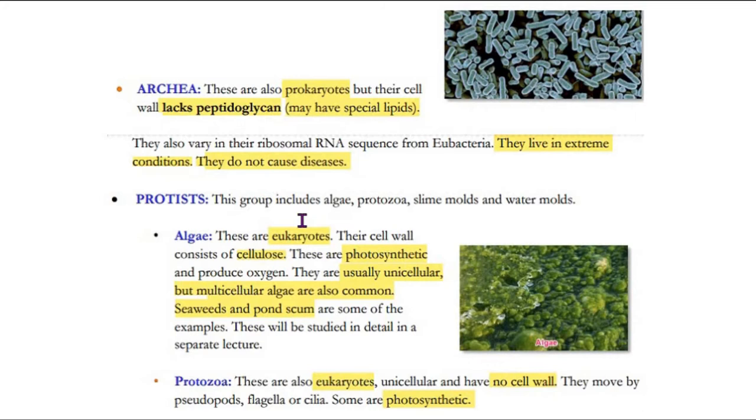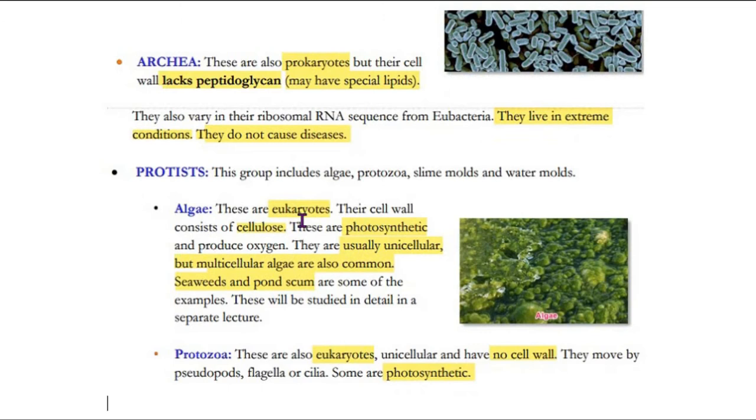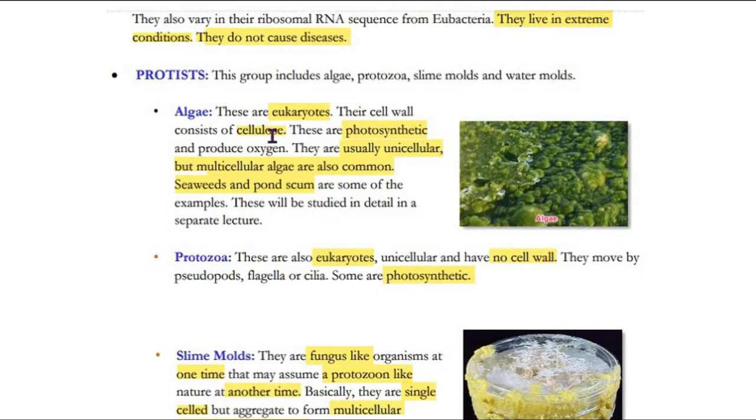The protists - we have learned that in all organisms there was no clear classification. Like algae, protozoa, water molds, slime molds. There are eukaryotes and photosynthetics. There are organisms that are unicellular and multicellular. Most common examples are seaweeds and pond organisms. As I have highlighted it, you have to remember this for MCQs.